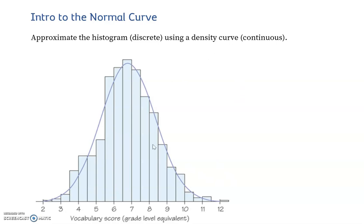In this case, if we have something like these vocabulary scores, we're drawing in basically a density curve, and this particular one is a normal curve.